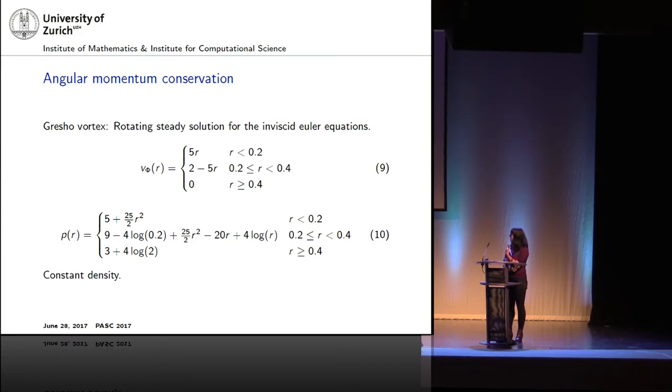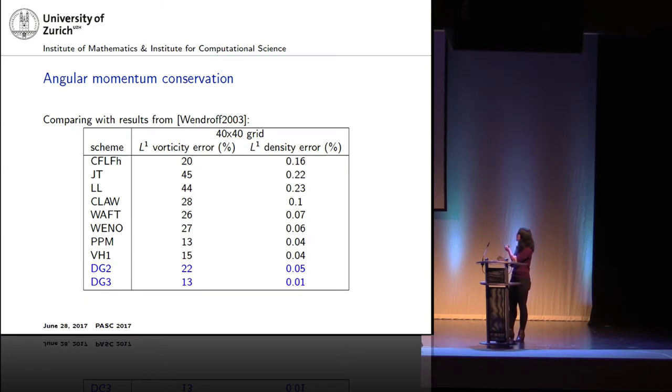For the last set of results, I'll talk about this angular momentum conservation. I take the Gresho vortex, which is a rotating steady state for inviscid Euler, and we have the form for the orbital velocity and pressure. And we can also derive the vorticity and angular momentum easily from this. I found a paper by Wendroff from 2003, where they compare a lot of different schemes, and how well they can capture the vorticity. And I compare it to our DG second order scheme, and DG third order scheme.